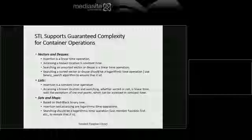For sets and maps, find should be logarithmic because it's a binary search tree. But if you use the global find, it just steps over each element linearly. Those containers that support fast searches have their own member find. The moral of the story: when using a container, look at the container interface first. If it has a member find, use it; if not, use std::find with begin and end iterators.